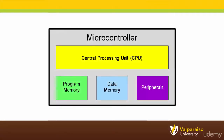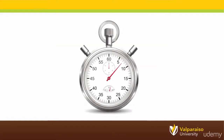Welcome back! In the last two sections we learned about the different types of components inside of a microcontroller. After looking at the CPU and memories we turned our attention to peripherals. We learned that peripherals perform tasks that the CPU is too busy to do or cannot do by itself. The first category of peripherals we looked at was timers.